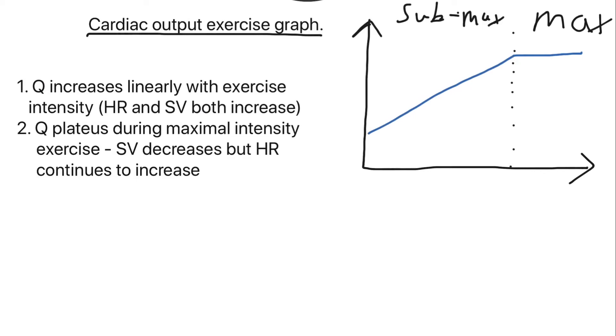Very simple. But then Q plateaus during maximum intensity exercise. It does not decrease. It doesn't decrease like it does with stroke volume or cardiovascular drift. It's because even though stroke volume is decreasing, heart rate is still increasing. So it levels itself out and it plateaus.